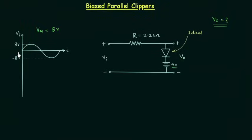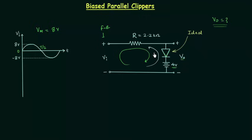I will analyze this circuit for the first half cycle from 0 to T/2. The polarity is plus-minus, and if I only consider the input voltage source Vi, the direction of current will be clockwise, similar to the direction of the arrow in the diode symbol, so Vi is forward biasing the diode. If I consider the 4V DC supply only, the current direction is opposite to the arrow, so the 4V DC supply is reverse biasing the diode. Therefore, the diode will be forward biased when Vi is greater than 4 volts, and the output voltage equals 4 volts.